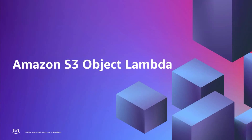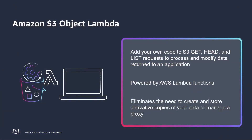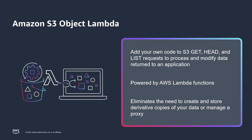Let us begin. First, let's see what S3 Object Lambda does. When you store data in Amazon S3, you can easily share it with multiple applications. Each application may have its own requirements and may need a different view of the data. S3 Object Lambda allows you to add your own code to process data retrieved from S3 before returning it to the application.